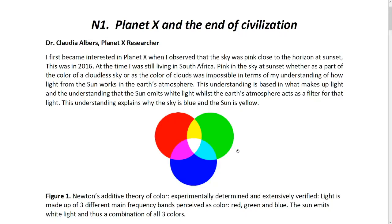I first became interested in Planet X when I observed that the sky was pink close to the horizon at sunset. This was in 2016, and at the time I was still living in South Africa. Pink in the sky at sunset, whether as a part of the color of a cloudless sky or as the color of clouds, was impossible in terms of my understanding of how light from the sun works in the Earth's atmosphere. This understanding is based in what makes up light, and the understanding that the sun emits white light whilst the Earth's atmosphere acts as a filter for that light. This understanding then explains why the sky is blue and the sun is yellow.